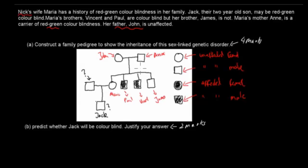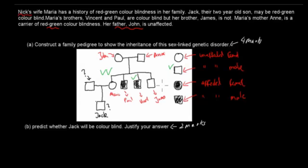So this is our pedigree tree and it will get you four marks. You get marks for providing the legend showing what the symbols mean, drawing the correct table, and correctly drawing the descendant line and marriage line. That would be your four marks.